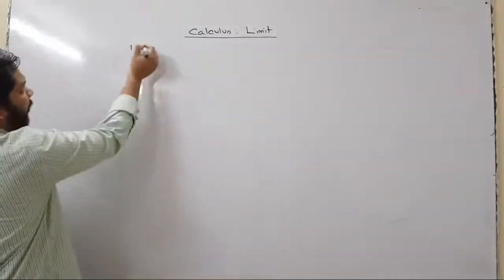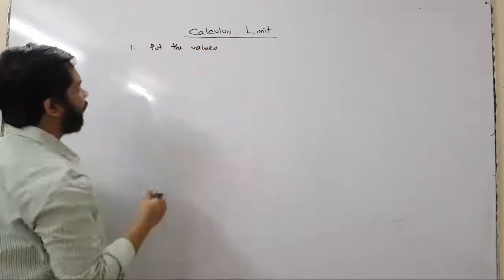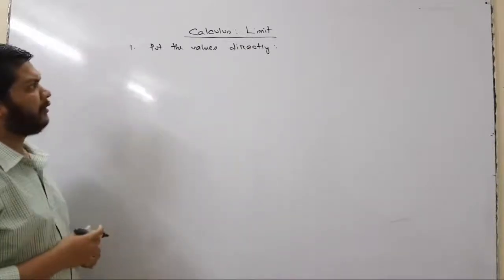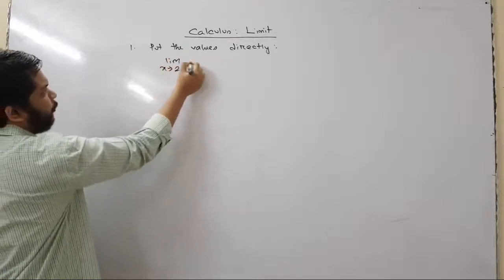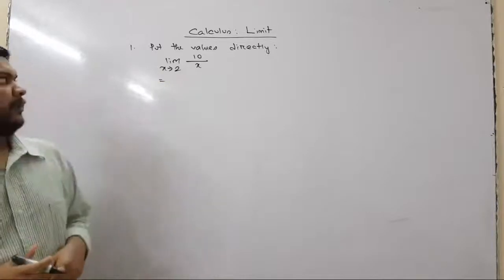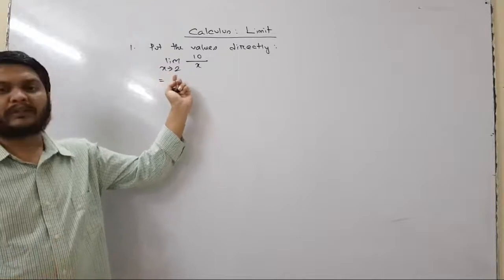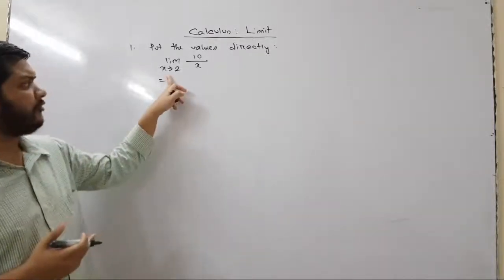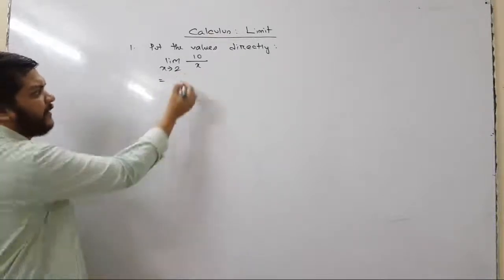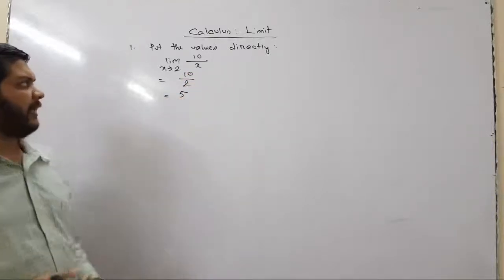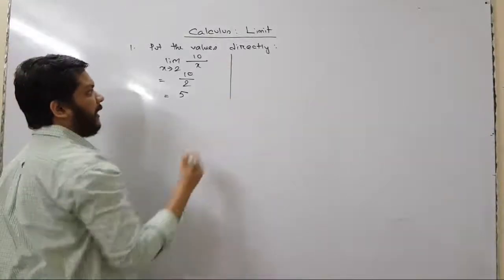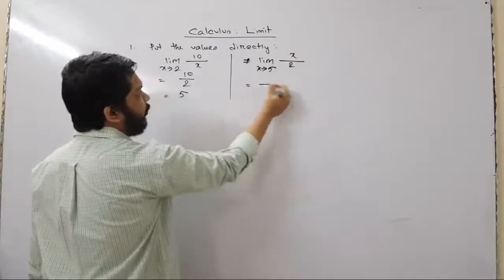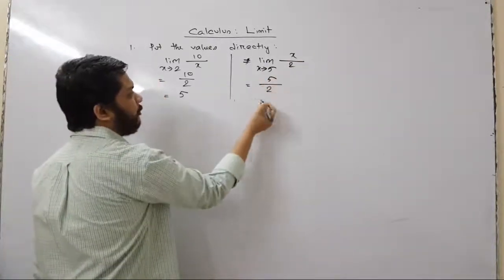The first technique is to put the values directly. For example, limit as x tends to 2 of 10 divided by x. We put x equals 2 and get 10 divided by 2, which is 5. Another example: limit as x tends to 5 of x divided by 2. We put x equals 5 and get 5 divided by 2. That's the answer.